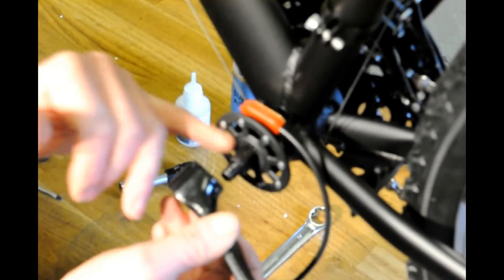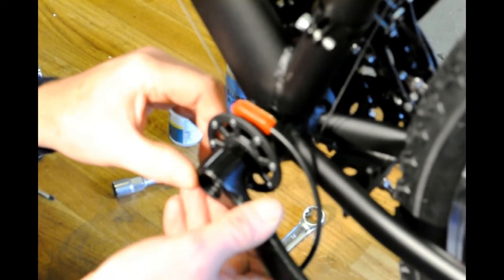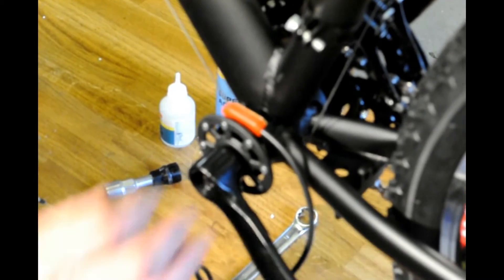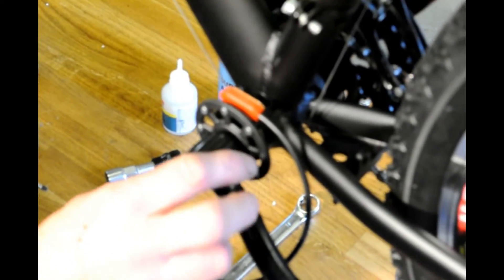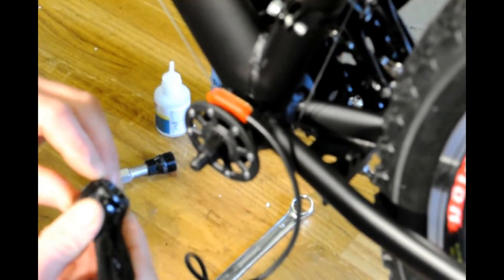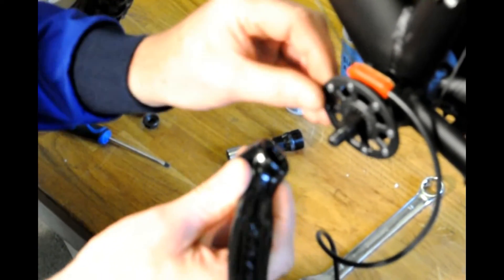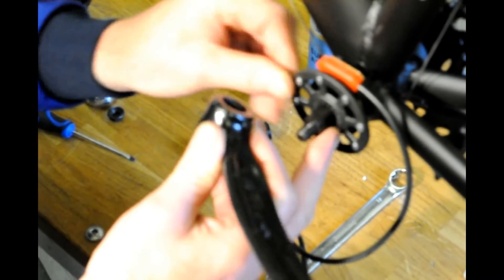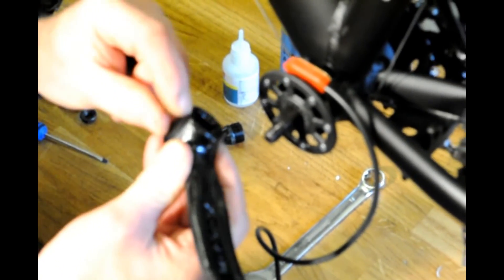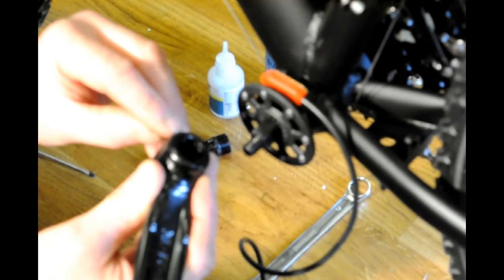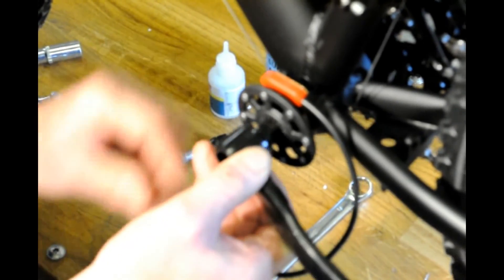You may find on some cranks you may need to put a washer behind here just to hold this in tight. On some bikes you may also need to take a small piece off the back of the crank to get this to fit. This can be gently filed off or if you have the luxury of a miller machine mill a small piece off to get it to fit.